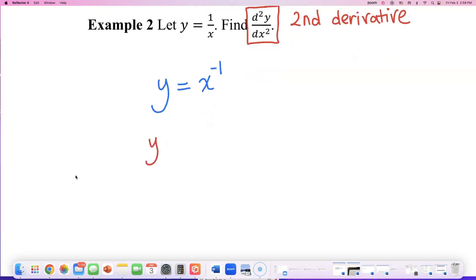So let's find the first y prime. You bring down this exponent of negative 1 to the front. You get negative 1, x to the—but remember to go down 1 from the old exponent. So if you do negative 1 minus 1, the new exponent has to be down at negative 2.